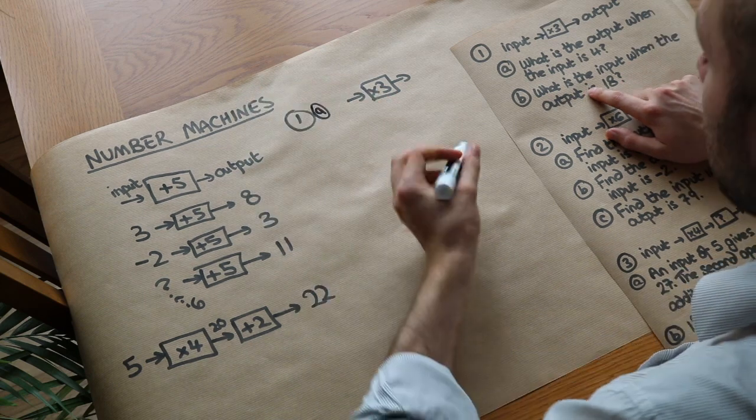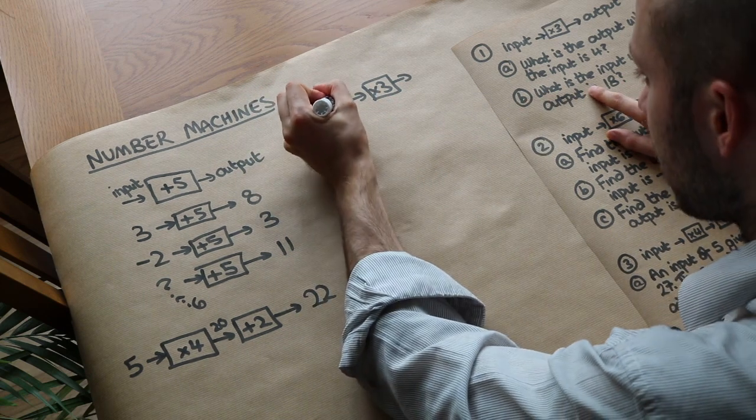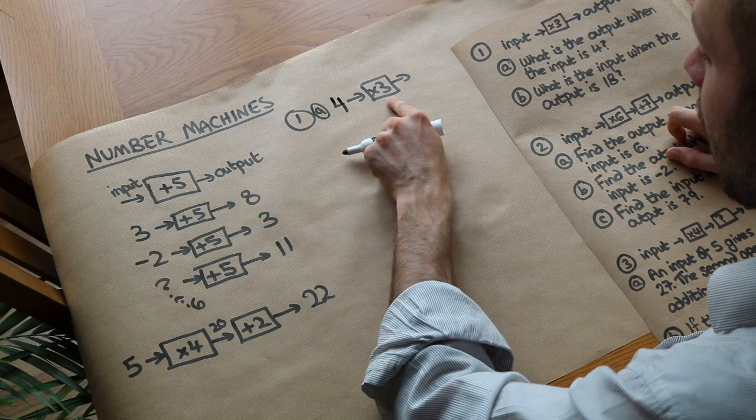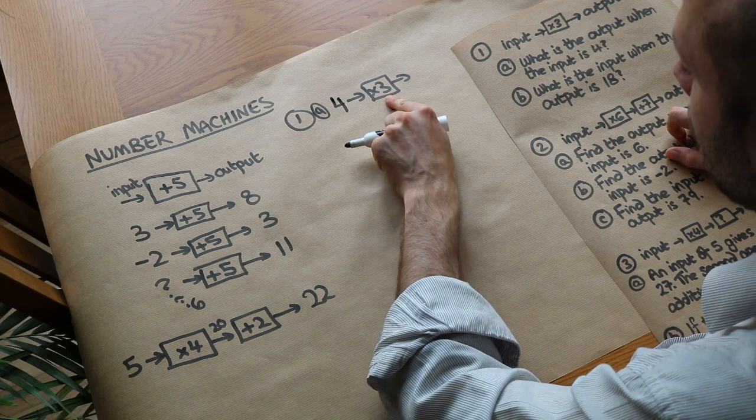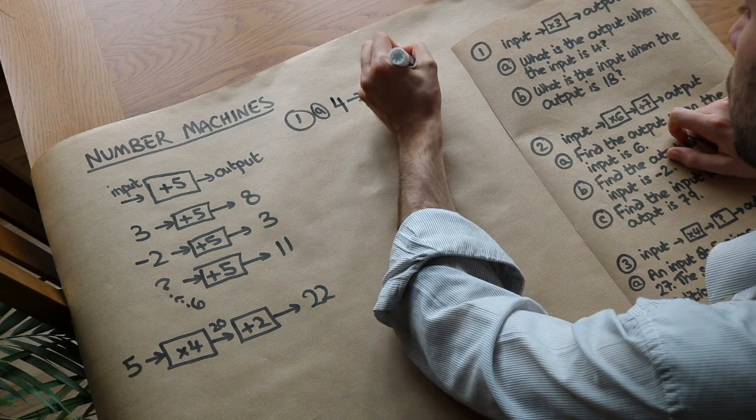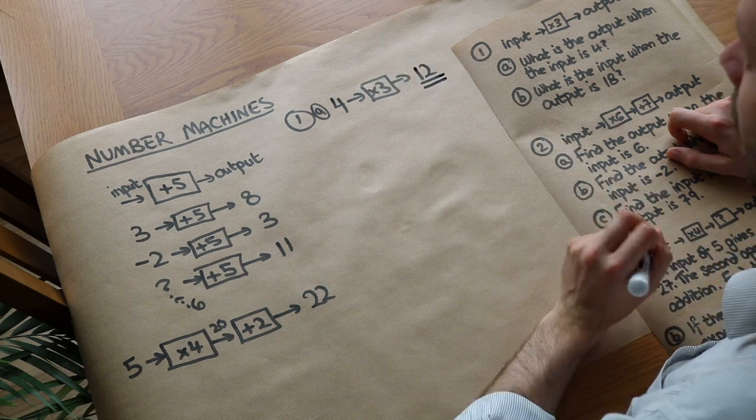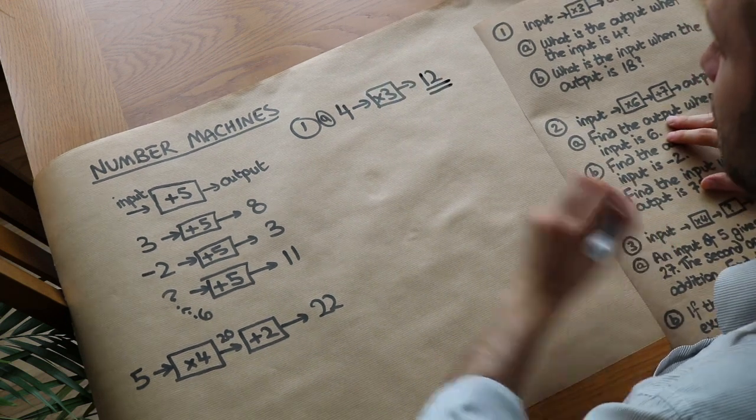So if the input was 4, that's what's fed into the number machine. 4, and then we feed into the number machine, we times it by 3 and that outputs 12. So the answer is 12. I'm just going to double underline it to indicate that that's the answer.